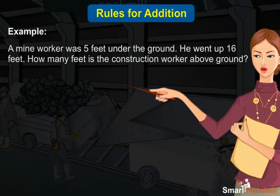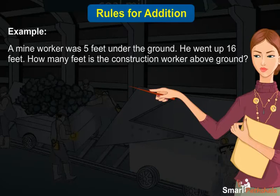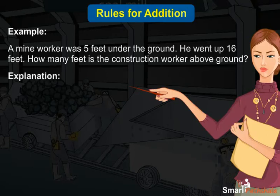Example: A mine worker was 5 feet under the ground. He went up 16 feet. How many feet is the construction worker above ground? The depth at which the mine worker was working is equal to minus 5 feet.